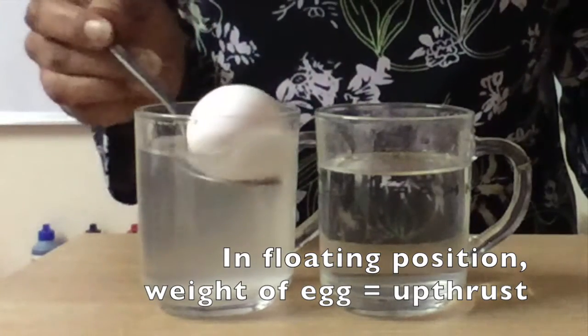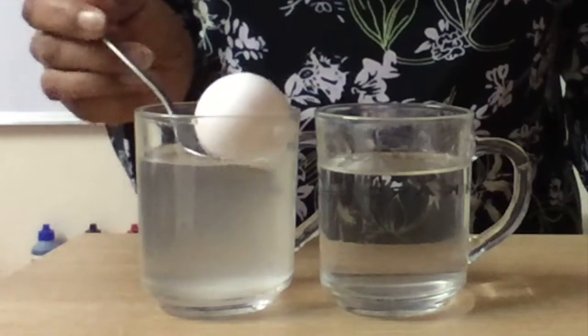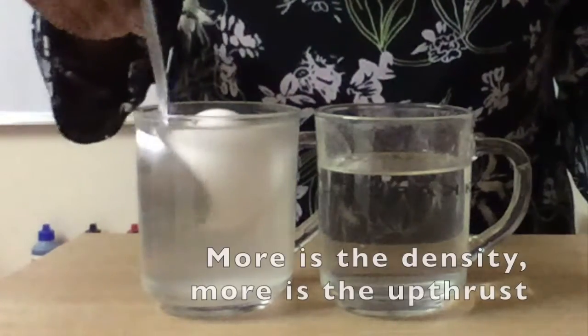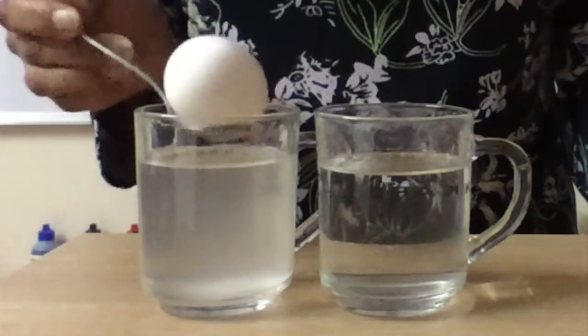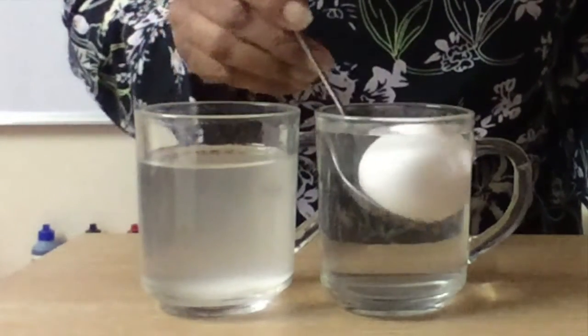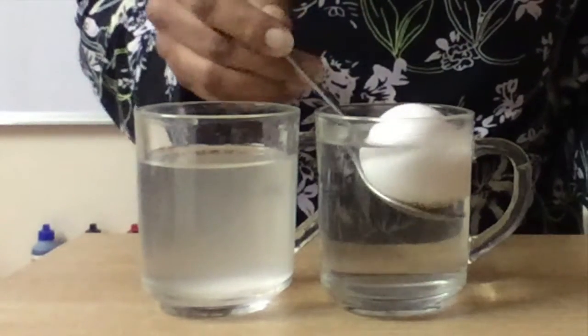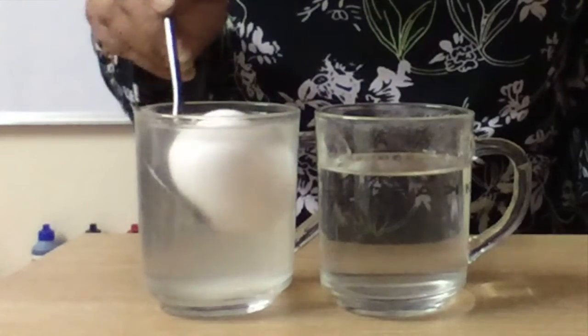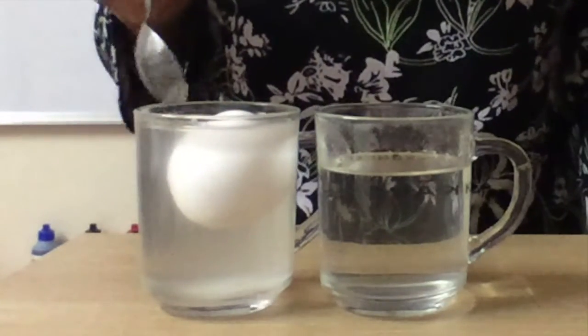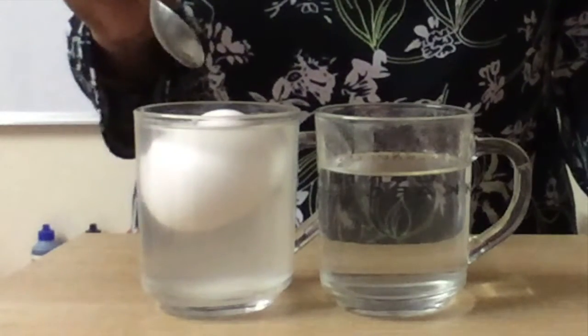So we have understood the factor on which the upthrust depends, that is density of the liquid. If the density of the liquid is more, upthrust is more. And so we will see that in normal water we have density 1 gram per centimeter cube, the egg sank. But here the density of the salt solution is approximately 1.2 or 1.17.